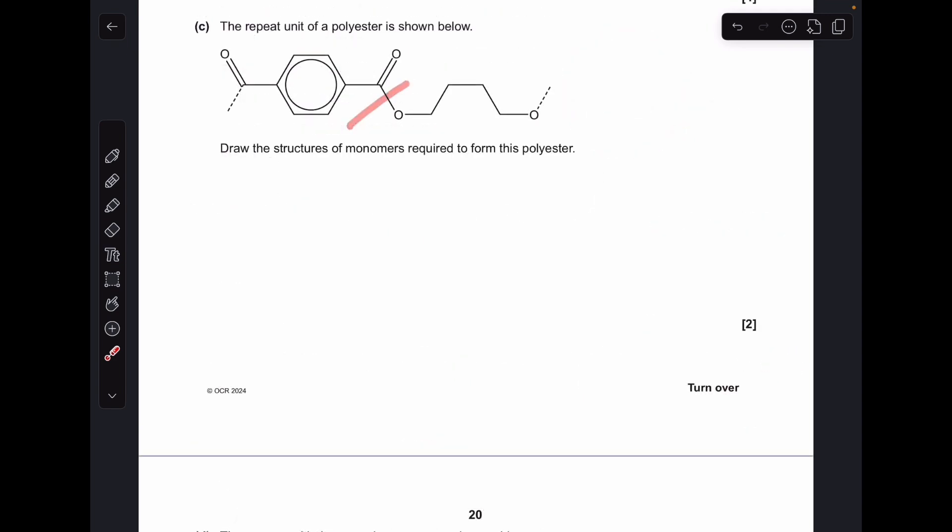Part C, you've got to draw the structures of the monomers needed to make this polymer here. So I've cut it there because this bit here is going to be one of the monomers. This bit here is going to be the other monomer. So we've got options for this part here. It could either be this dicarboxylic acid or this diacyl chloride. And to generate this part here, it needs to be this diol.